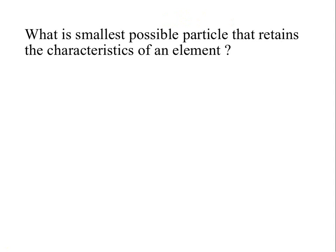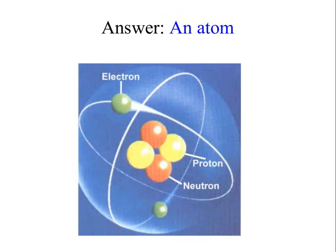What is the smallest possible particle that retains the characteristic of an element? Well, that would be an atom. Here we have a picture of a helium atom. That's one single atom of helium. That's as small as you can get with helium. Any more than that would be something else.